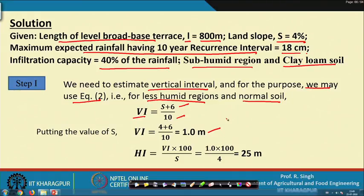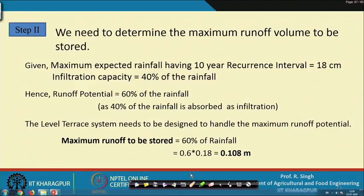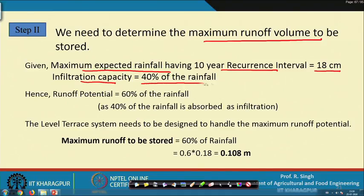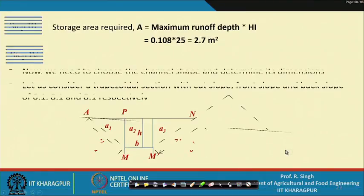The data: L = 800 m, S = 4%, rainfall = 18 cm (10-year return), infiltration = 40% of rainfall, subhumid region with clay loam. First, estimate vertical interval: V_i = (S + 6) / 10 = (4 + 6) / 10 = 1.0 meter; horizontal interval H_i = 100 × V_i / S = 25 meters. Maximum runoff = 60% of 18 cm = 0.108 meters.